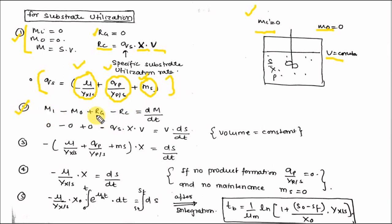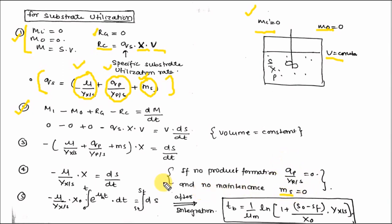Putting the values into the mass balance equation gives minus Qs·X·V equals V·dS/dt, because volume is constant. Dividing the whole equation by volume (third step), you get the substrate balance equation. If there is no product formation, Qp equals 0; and if there is no maintenance, Ms equals 0. After integrating, the batch time for substrate utilization is: TB equals (1/Mu_m) times ln[1 plus (S₀ minus Sf) divided by (X₀ times Yxs)].